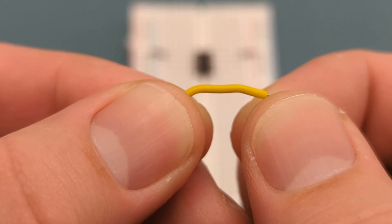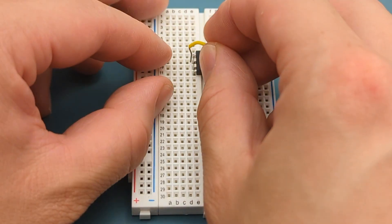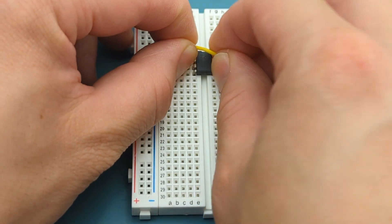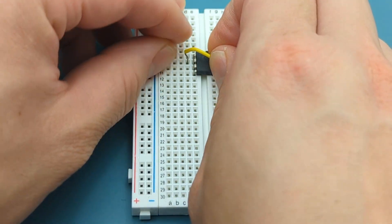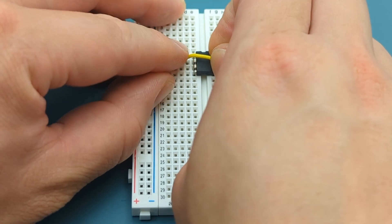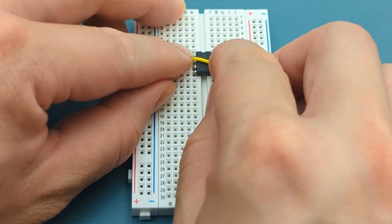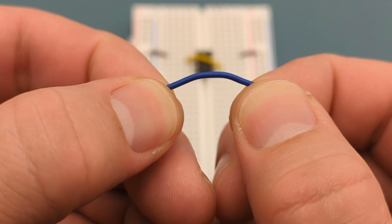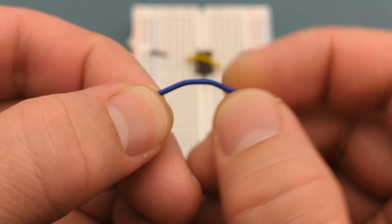Use a jumper wire to connect pin 2 or trigger to pin 6 or threshold. Use a jumper wire to connect pin 4 or reset to pin 8 or VCC.